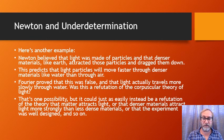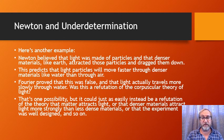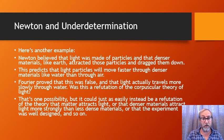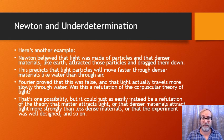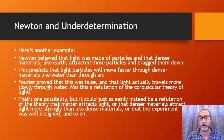Again, that's one possibility, but when we do this experiment we're assuming many other things too. It could be a refutation of the claim that denser materials attract the light, or a refutation of the claim that matter attracts light at all. Newton had a whole theoretical apparatus, and any one part of it could have been the false component.